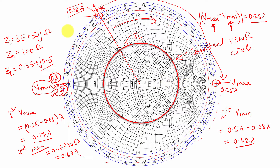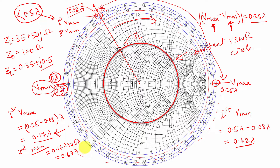To get the first voltage maxima and first voltage minima, those values less than 0.5 lambda are the first voltage maxima or first voltage minima. The first voltage maxima is always less than 0.5 lambda; the second will be more. Similarly, the first voltage minima is 0.42 lambda, which is less than 0.5 lambda, while the second is 0.92 lambda. So we just take the difference as 0.25 lambda and keep values in the range 0 to 0.5 lambda. I hope you will be able to calculate voltage maxima and voltage minima distance from the load for any problem. Thank you.